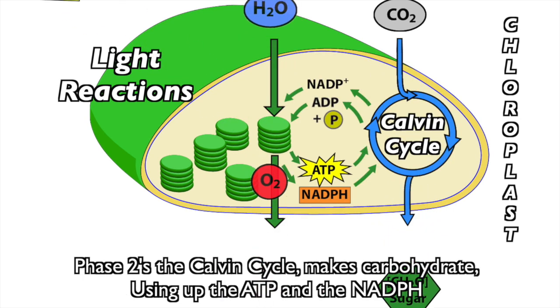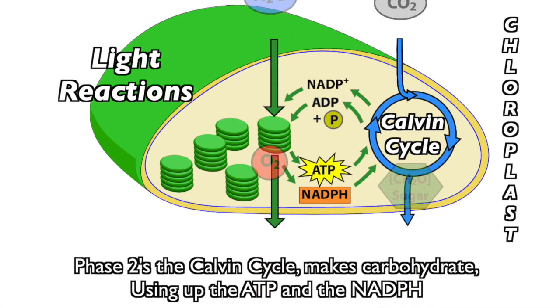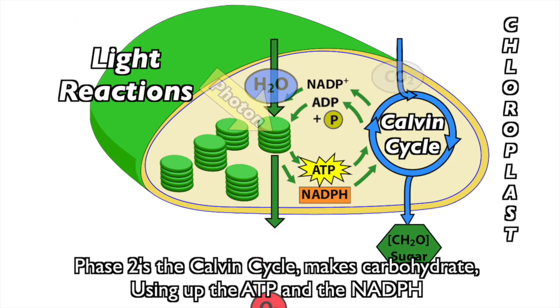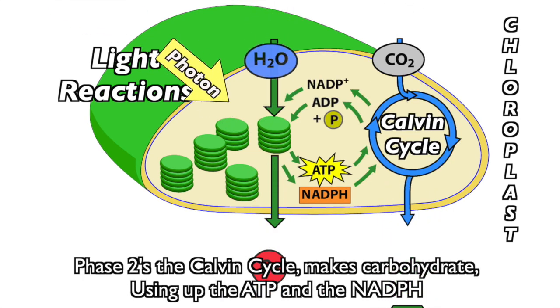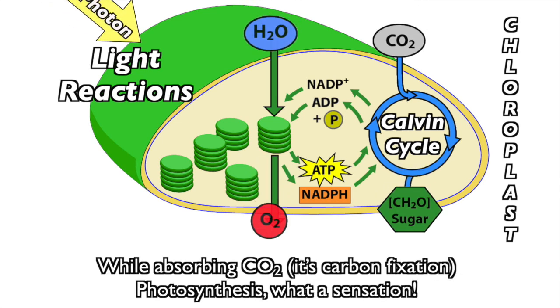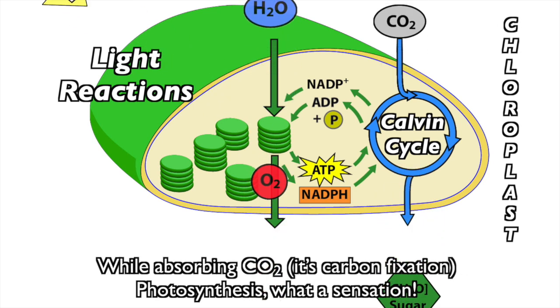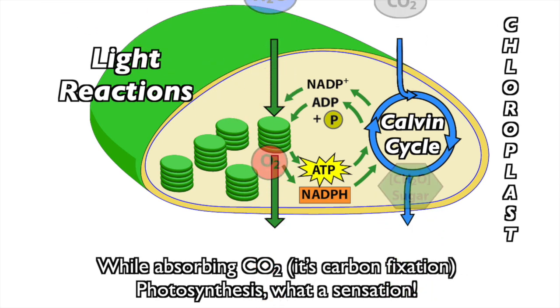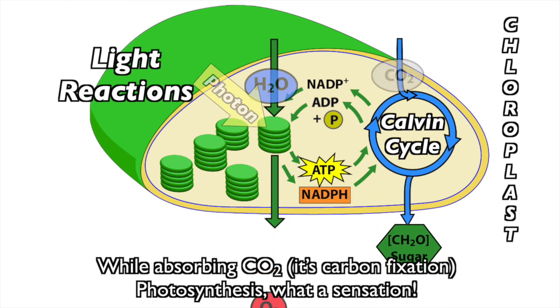Phase 2 is the Calvin cycle, which makes carbohydrate, using up the ATP and NADPH while absorbing CO2. It's carbon fixation — photosynthesis.